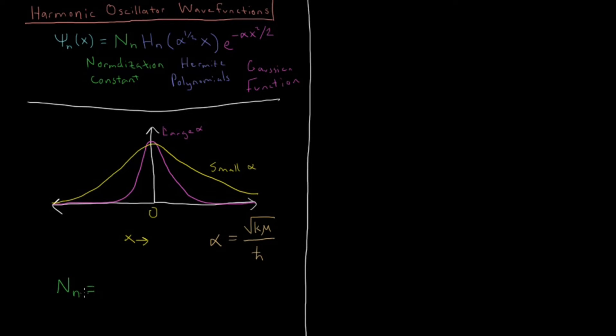So this n is going to equal 1 over the square root of 2 to the n, where n is just an integer from 0 to some value, times n factorial, times alpha over pi to the 1 fourth power. And again, n is just starting at 0, counting up from there. So that's our normalization constant.